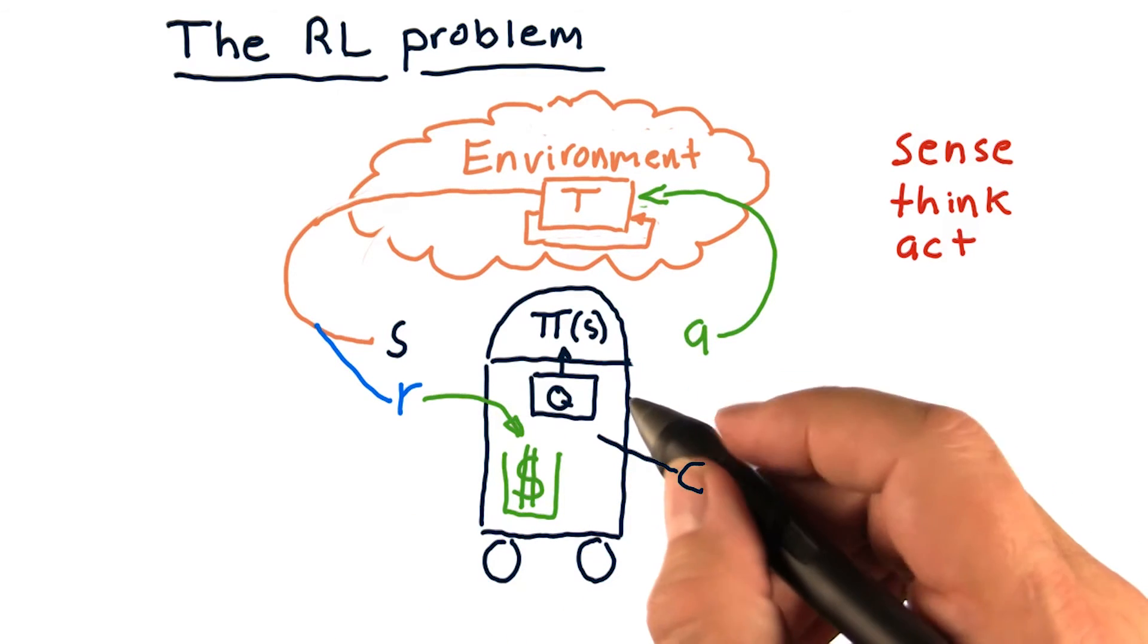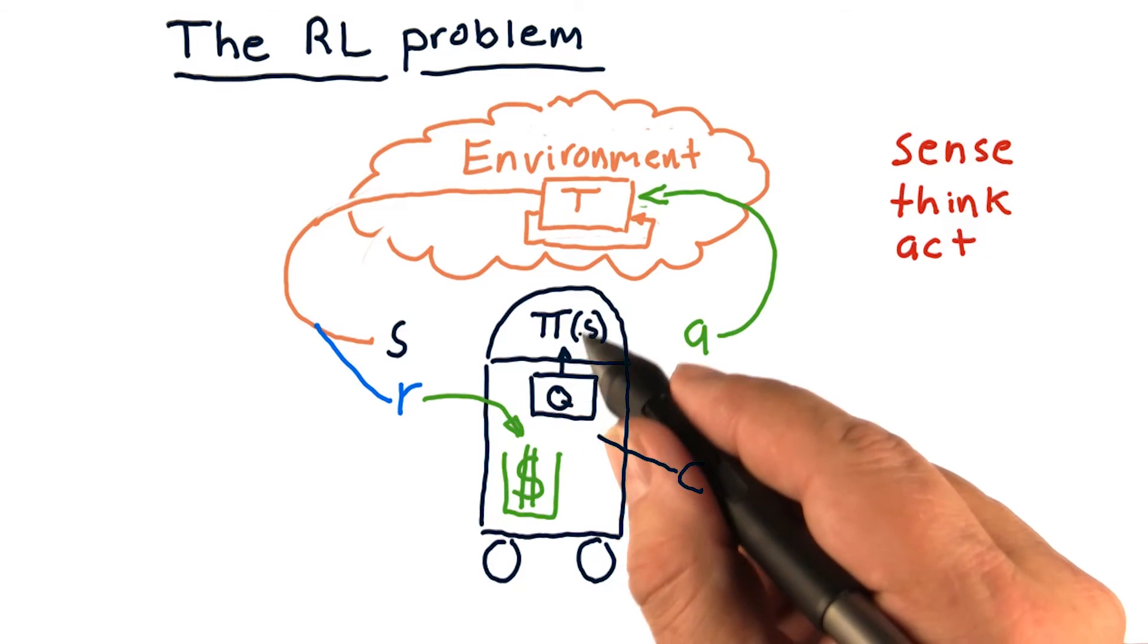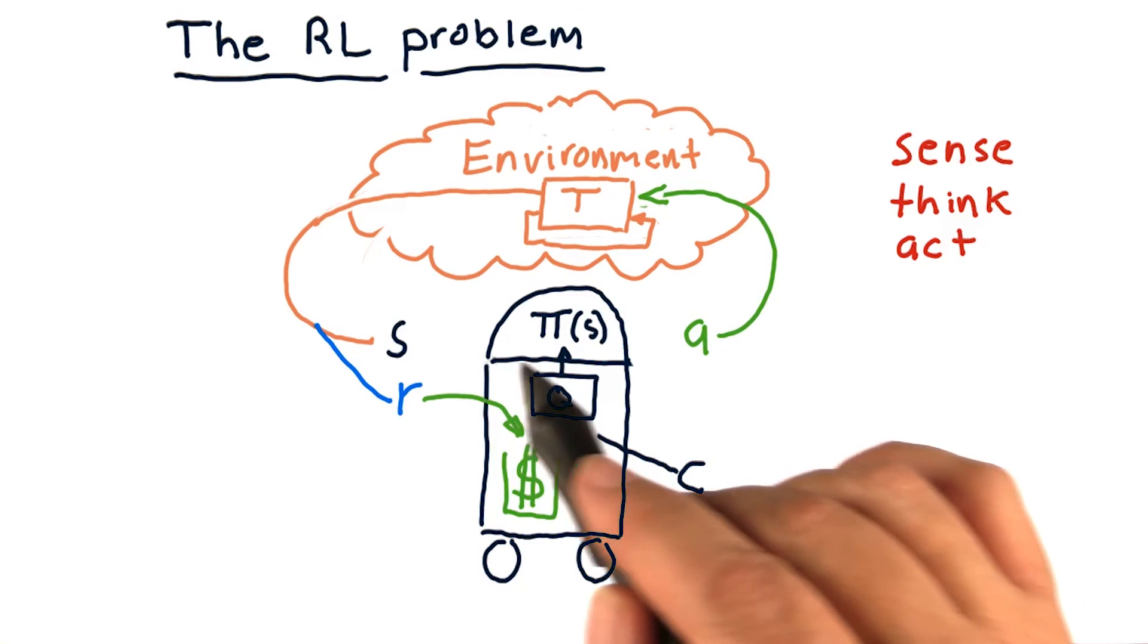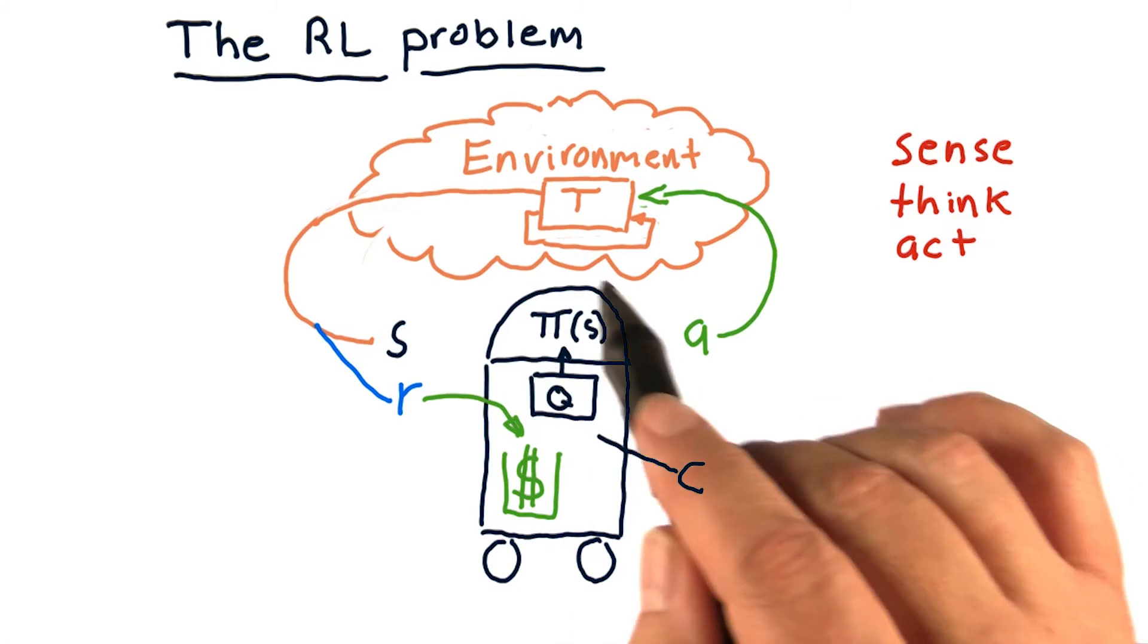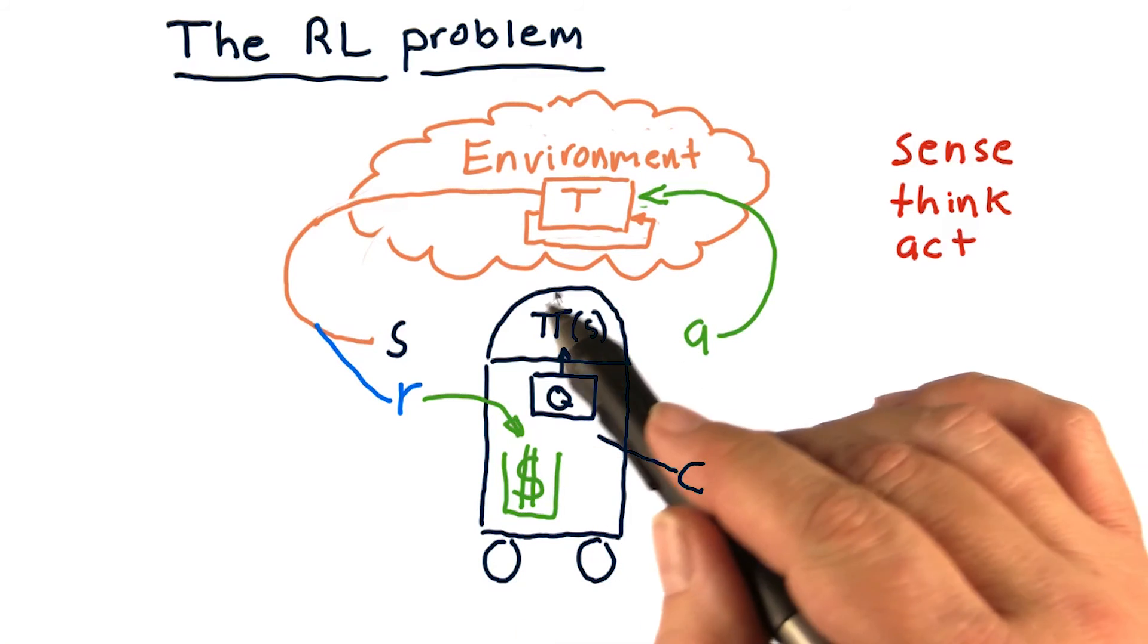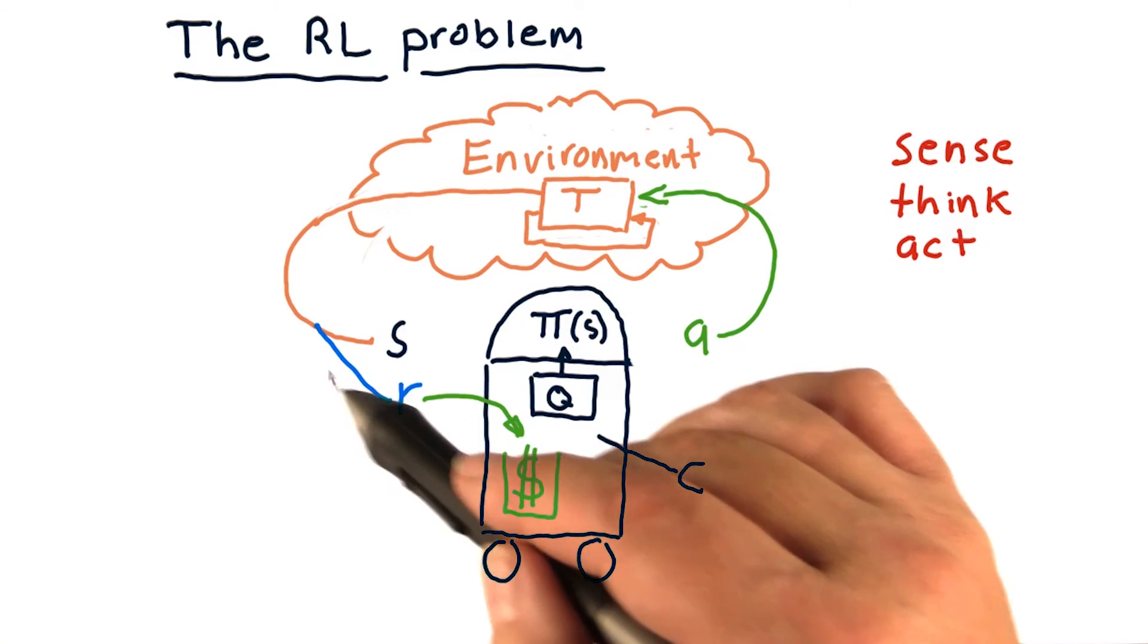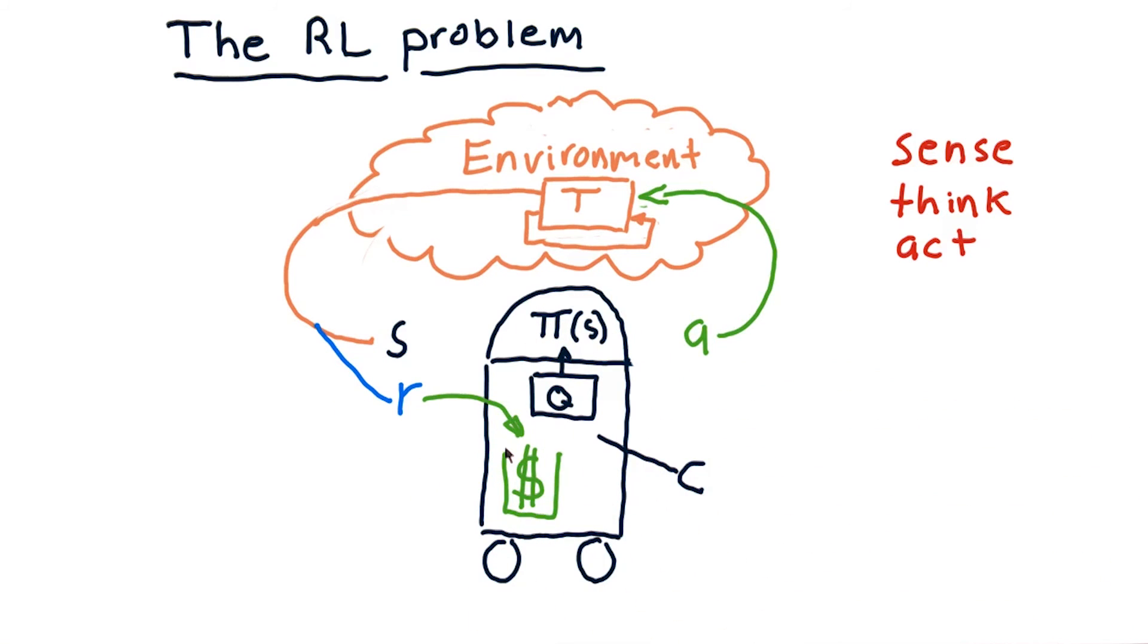Somewhere within the robot, there's an algorithm that takes all this information over time to figure out what that policy ought to be. Let me recap: S is the state of our environment, and that's what the robot senses in order to decide what to do. It uses its policy pi to figure out what that action should be. By the way, pi can be a simple lookup table. Over time, each time the robot takes an action, it gets a reward, and it's trying to find a pi that'll maximize its reward over time.